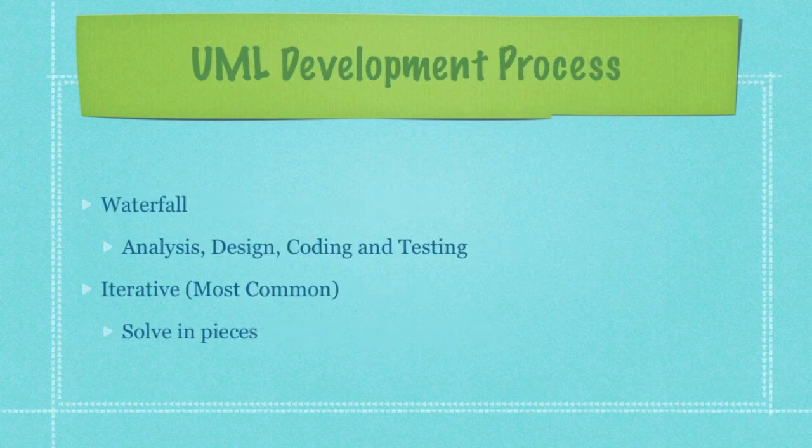Then we get into the development process. You're basically going to have two different ways of developing a UML diagram and your system in general. The waterfall way requires you to complete the following in order: analysis, then design, then coding, and finally testing. Everything is completely done in order before you proceed to the next step.